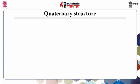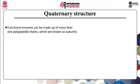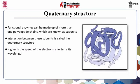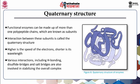Sometimes proteins or functional enzymes can be made up of more than one polypeptide chain, which are known as subunits. The interaction between these subunits is called the quaternary structure. Various interactions including hydrogen bonding, disulfide bridges, and salt bridges are also involved in stabilizing the overall complex.